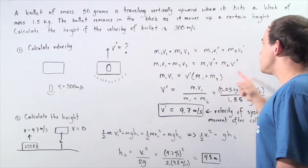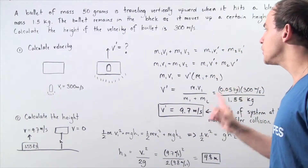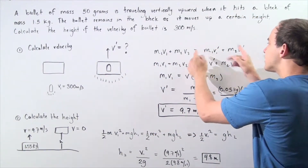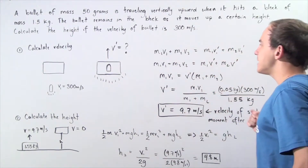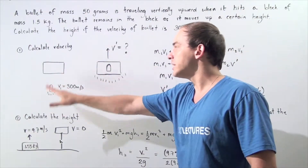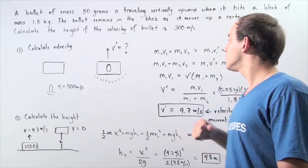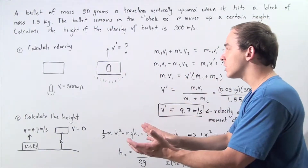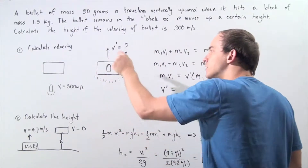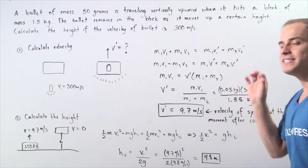We use the conservation of momentum because we have a completely inelastic collision — only momentum is conserved during our collision. The sum of the momentum of our two objects before the collision equals the sum of the momentum after. Here, m1 and m2 are the masses of the bullet and the block; v1 and v2 are their velocities before the collision; and v1 prime and v2 prime are their velocities after. Since both objects move together after the collision, v1 prime and v2 prime are equal and we replace them with simply v prime.